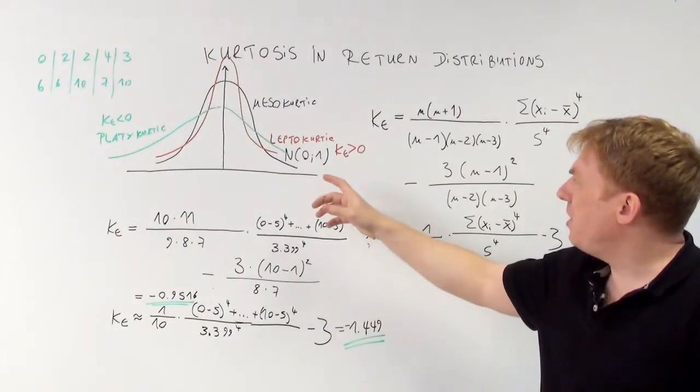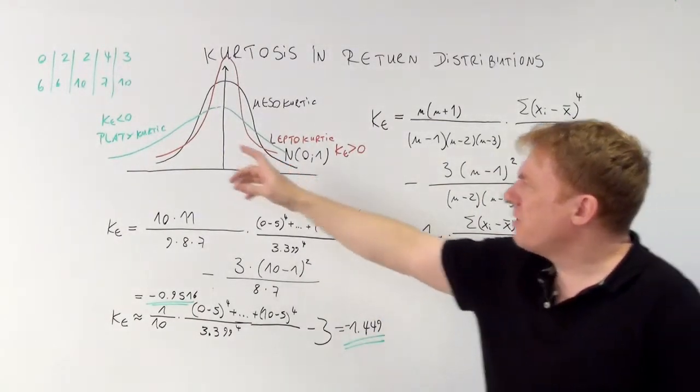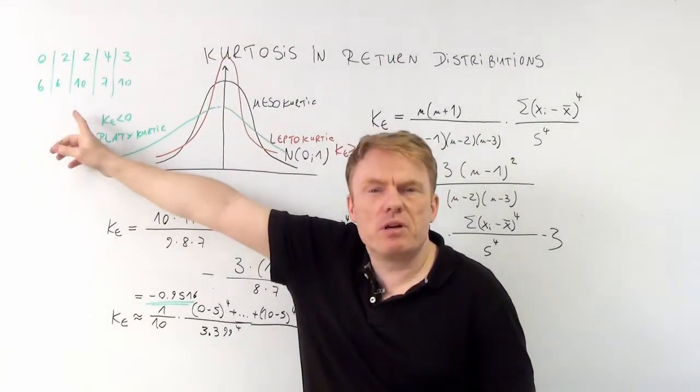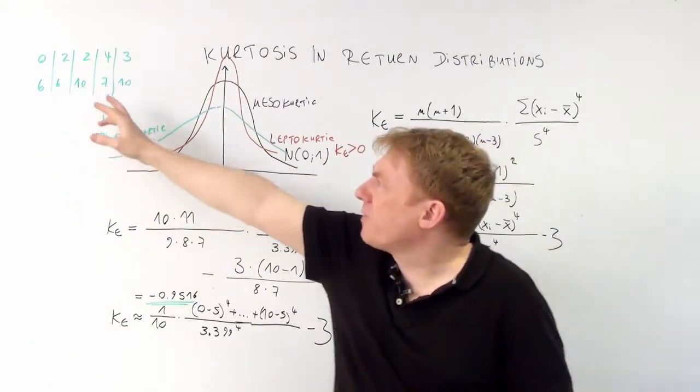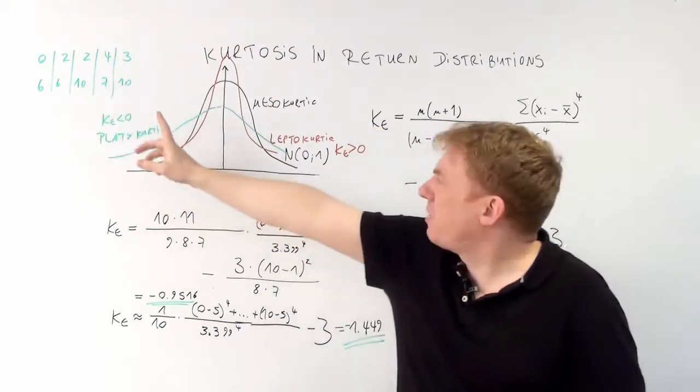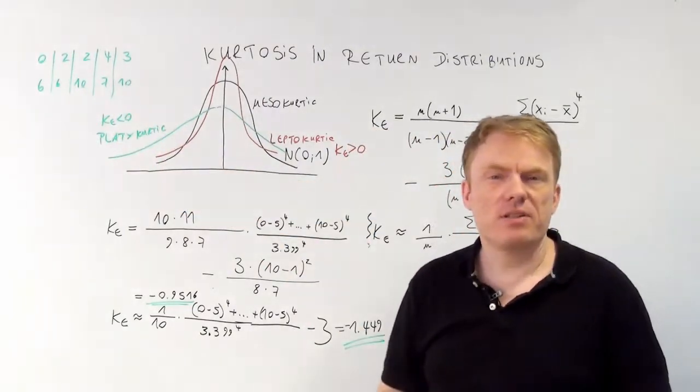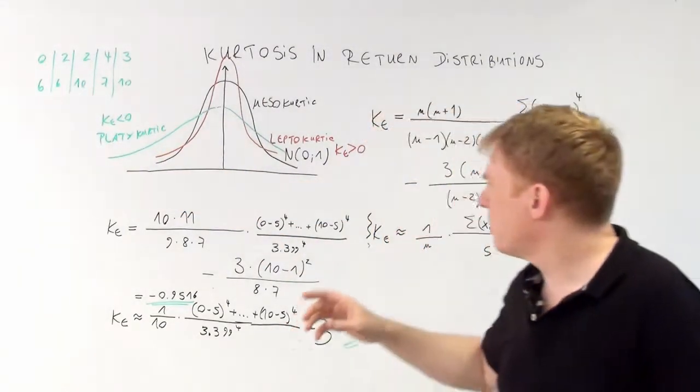This is what is important here. As we can see, the data we've been using in different videos: 0, 2, 2, 4, 3, 6, 6, 10, 7, 10. As we put them in here...